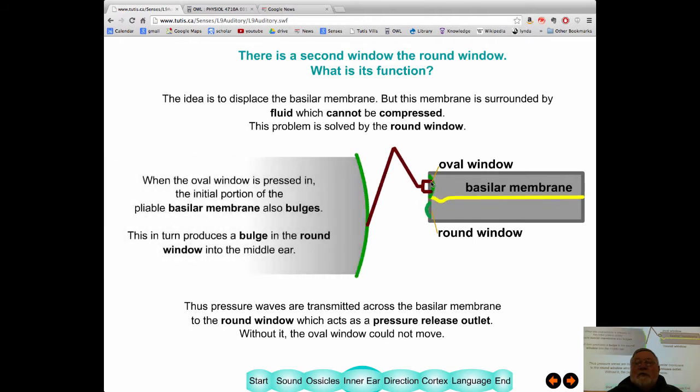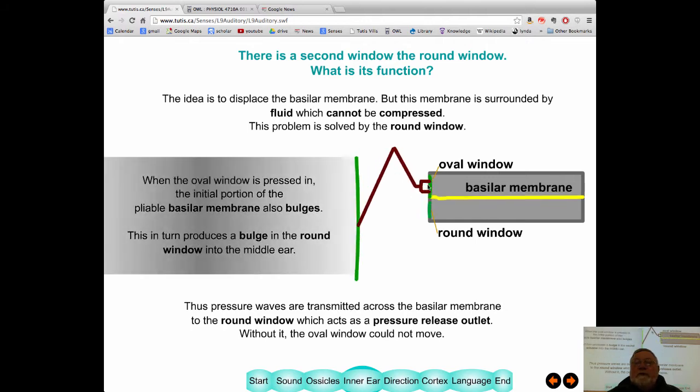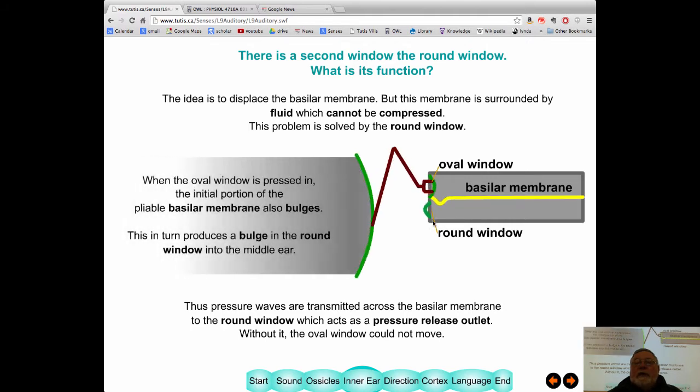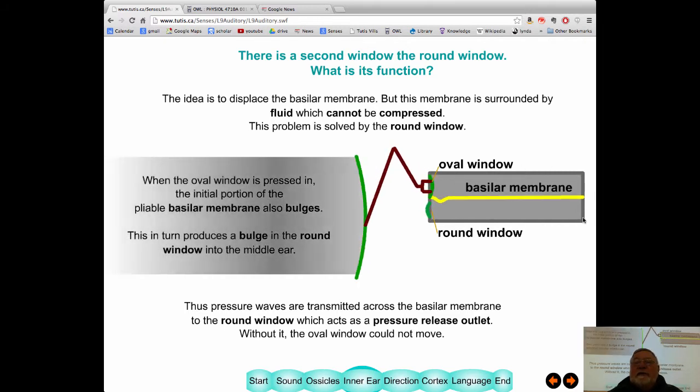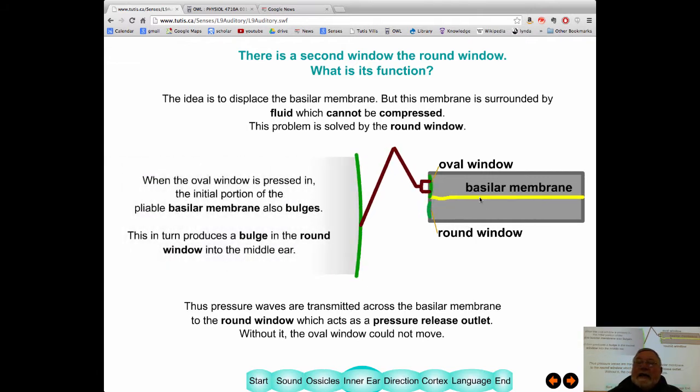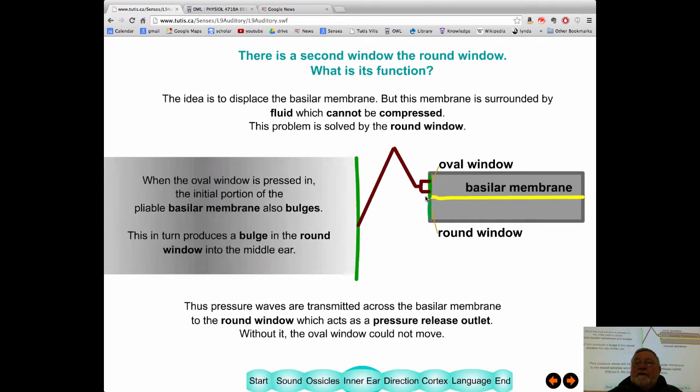Now, beside this oval window, which is what this lever pushes, you have this round window. And the question is, why is it there? Well, this is this cochlea and we've unrolled it just for the sake of simplicity. And inside the cochlea, we have this basilar membrane, it's a membrane that cuts across half this can.